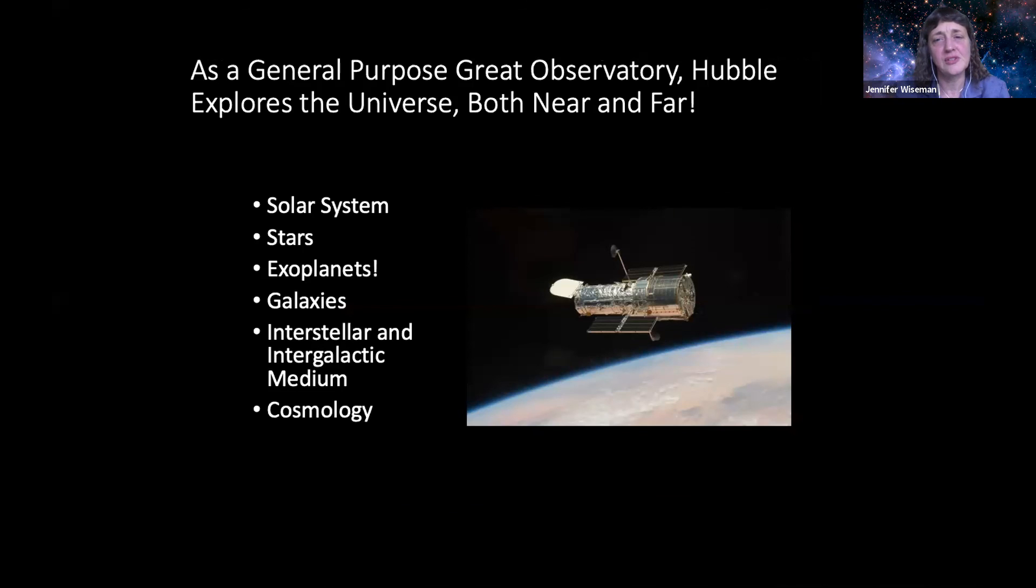And of course this is the same region, but with the infrared view you can see through a lot of that dust, see many more stars that were previously veiled by that dust, and see into those columns where you see bright spots, hot spots where protostars are forming, in particular at the tips of these columns, which are dense globs of gas and prime spots for star formation to continue. As a general purpose great observatory, Hubble explores the universe both near and far in many different regimes. Hubble is looking at the solar system, it's looking at stars, it's looking at planets around stars other than our sun, we call those exoplanets, it's looking at galaxies beyond our own Milky Way, it's looking at the material between stars and between galaxies, the interstellar and intergalactic medium, it's even looking at the universe as a whole by studying different aspects of it, we call that cosmology.